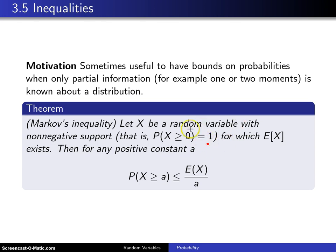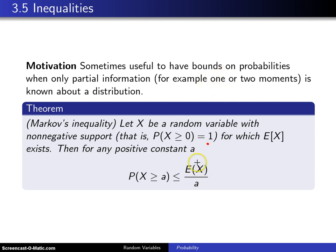For that random variable, if we know the expected value of X and it exists, then for any positive constant a, the probability that X is greater than or equal to a is less than or equal to the expected value of X divided by a. So we have one moment — namely the expected value of X — and knowing that, we can bound this particular probability.